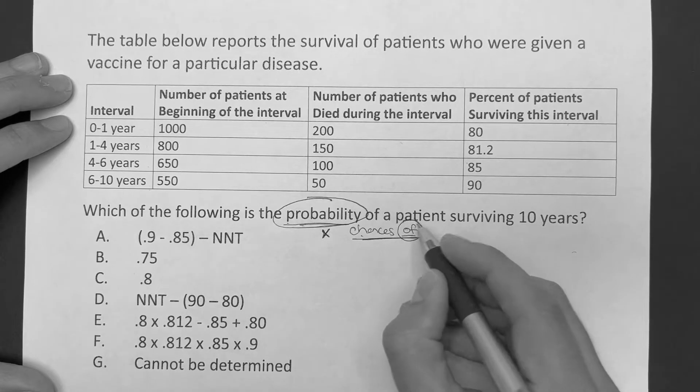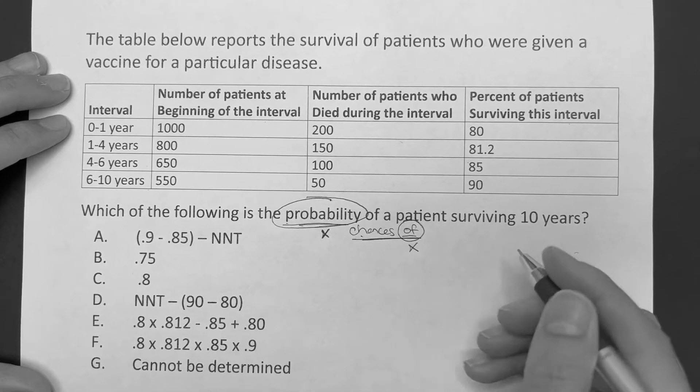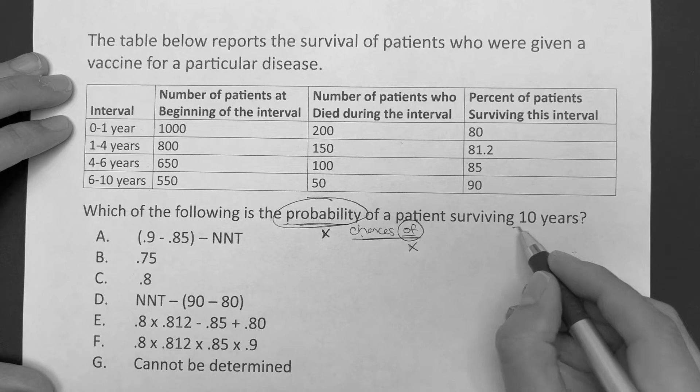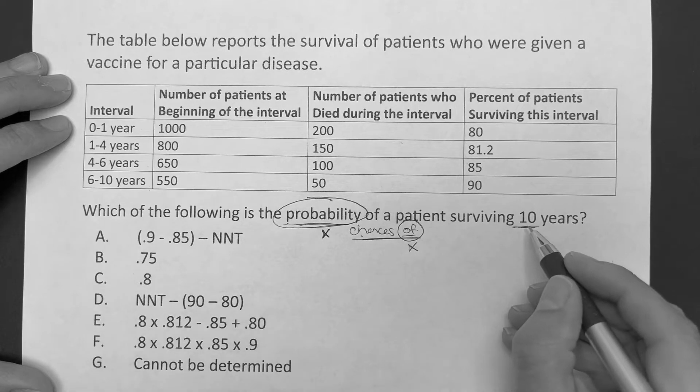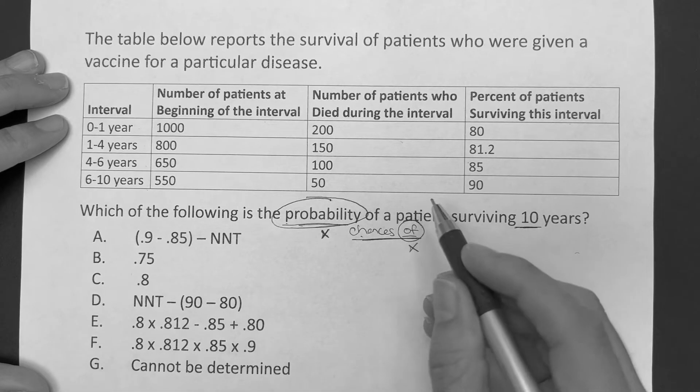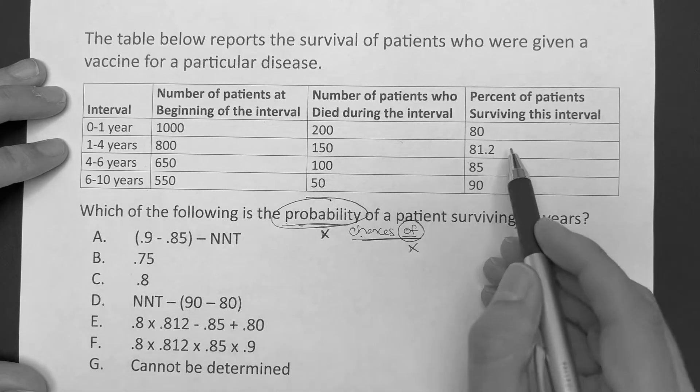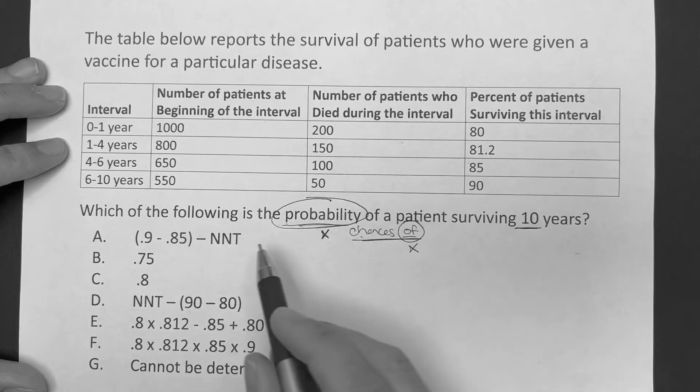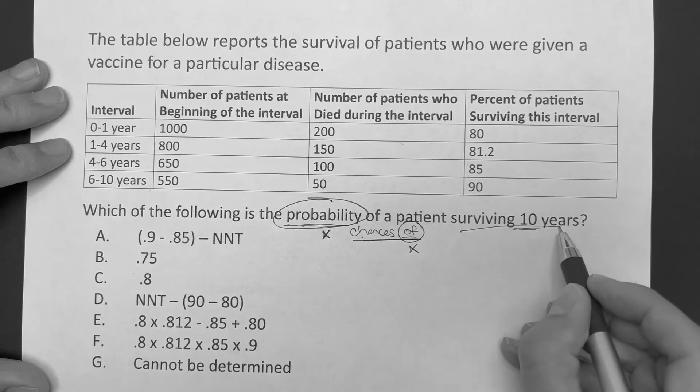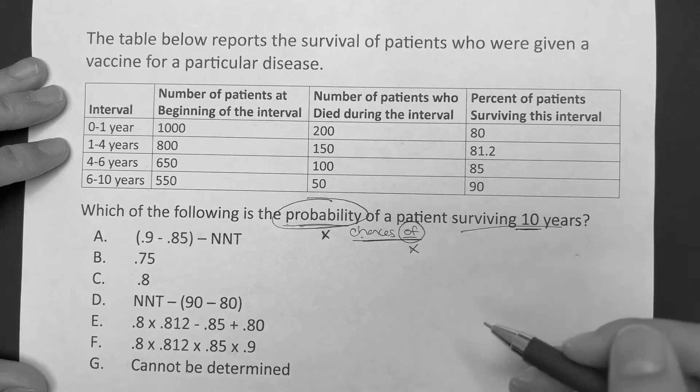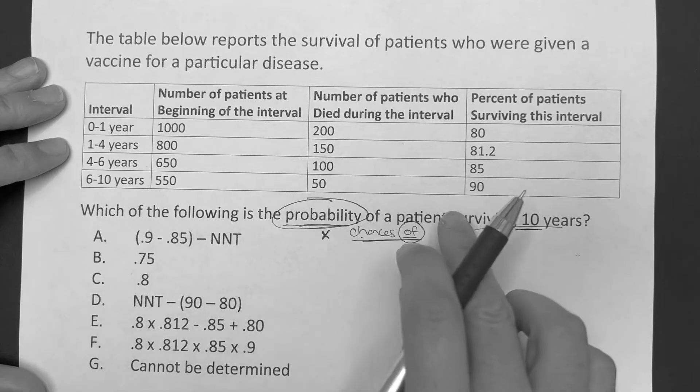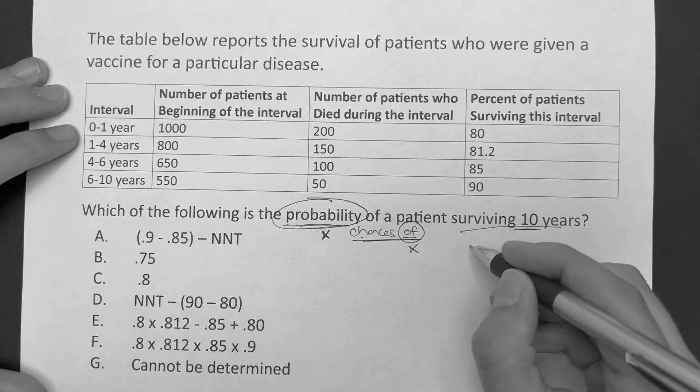Anytime I see the word of in math, I always think multiplication. Surviving 10 years. I know in this exam they're not going to make me do calculations that are going to take 10 minutes long. So I'm going to decipher this stuff and say what's important. The question is surviving 10 years.